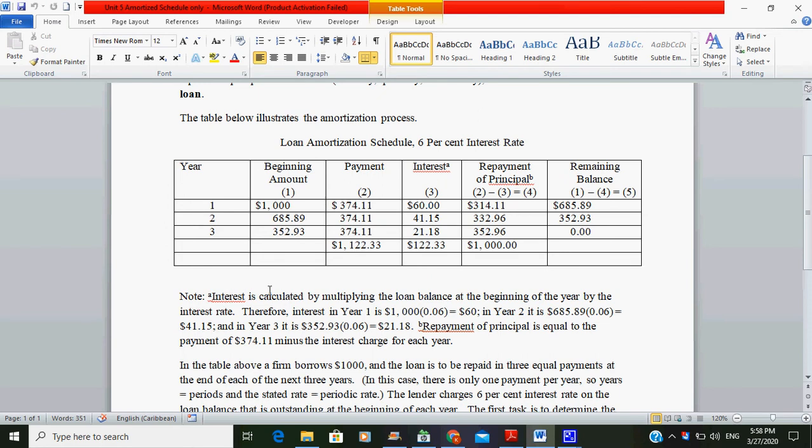To calculate the interest now, notice: interest is calculated by multiplying the loan balance at the beginning of the year by the interest rate. So therefore, interest rate in year one is 1,000 times 0.06, which is 6%. And that will give you $60.